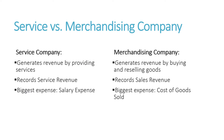A service company generates revenue by providing services. They record service revenue and typically their biggest expense is going to be salary expense. A merchandising company, on the other hand, generates revenue by buying and reselling goods. They record sales revenue and their biggest expense is going to be cost of goods sold, which is the cost of the goods that they sell.